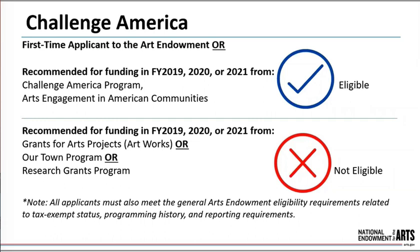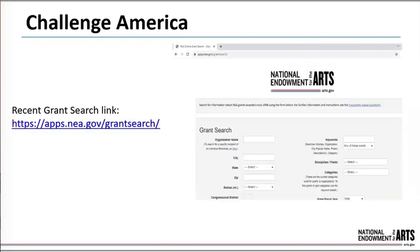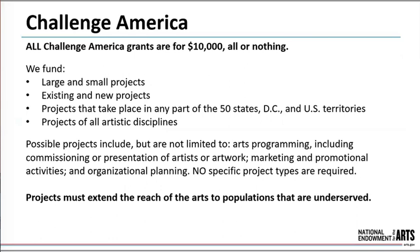It is our expectation that organizations will eventually transition from Challenge America to the Grants for Arts Projects program, which is the Arts Endowment's principal funding opportunity. You can check your organization's grant history using the Arts Endowment's recent grants tool on our website. If your organization applied for funding in fiscal year 21 and hasn't received notification yet, you can contact your program staff to check the status. All Challenge America grants are for $10,000.